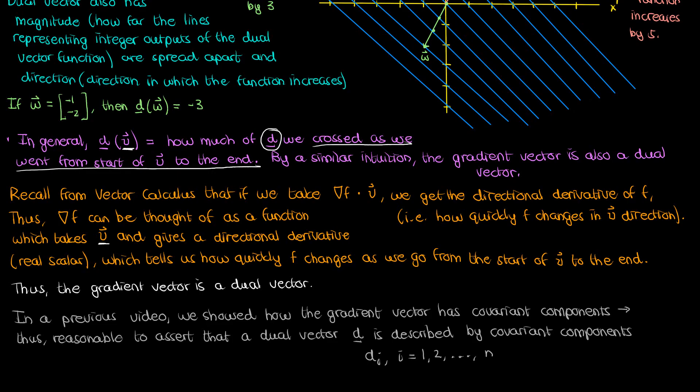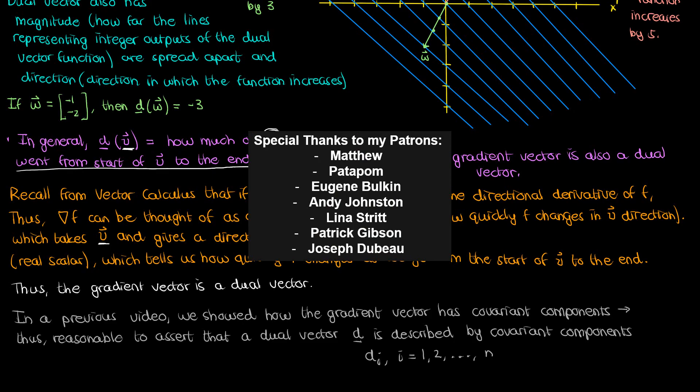To conclude, I've described the intuition behind the dual vector in tensor algebra. It's a function which takes a regular vector as input and tells us how much that dual vector changed when we went from one end to the other. We also showed that the gradient vector follows the same nature, and ultimately concluded that a dual vector is a covariant vector. In the next video I'll go over algebra involving dual vectors and how to convert between a dual vector and its corresponding regular vector.